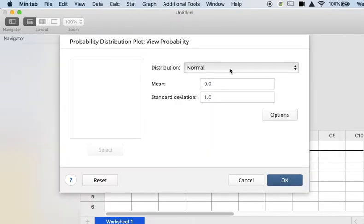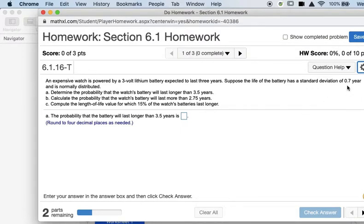Since this is a normal distribution problem, I can leave Normal selected in the Distribution box. I'm going to enter my mean and standard deviation. My mean was 3 years and my standard deviation was 0.7 years.